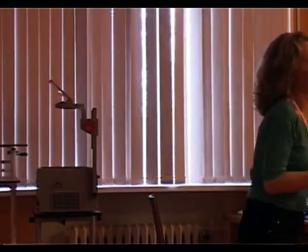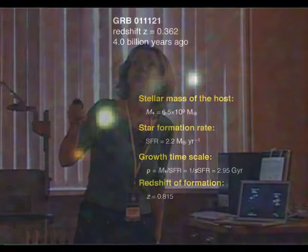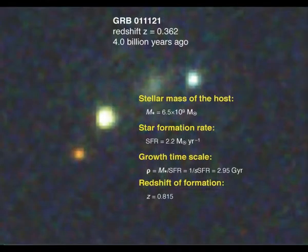I will talk about galaxies hosting gamma-ray bursts. This is a typical event — this is the gamma-ray burst, this is the galaxy, stars along the line of sight, and it's already at redshift 0.4, so it's quite typical.